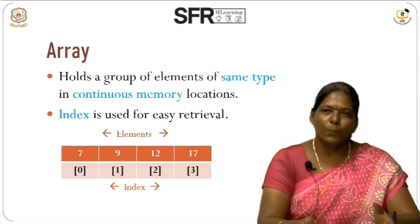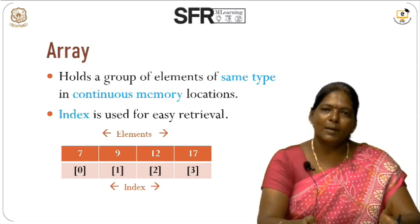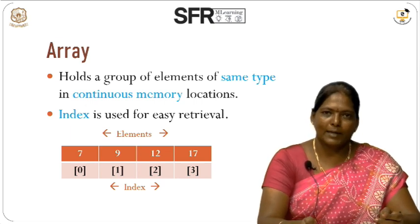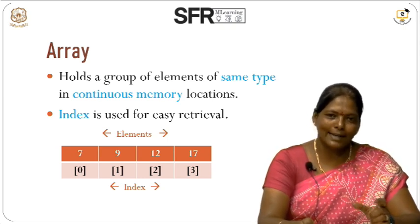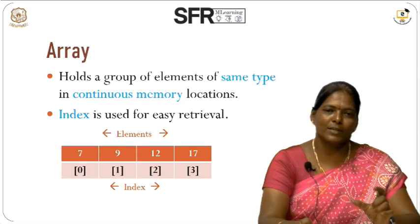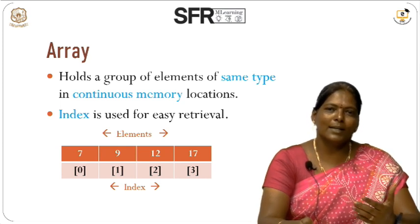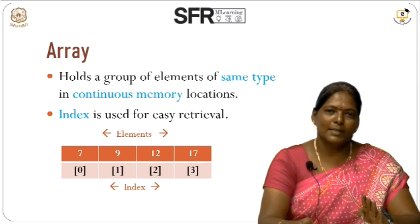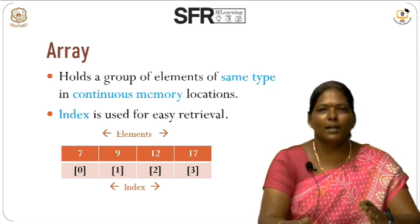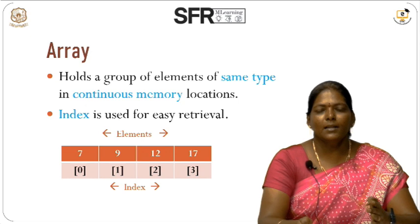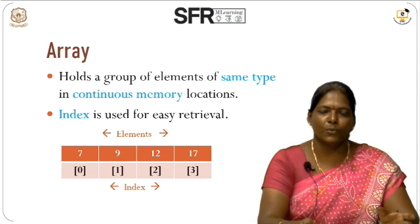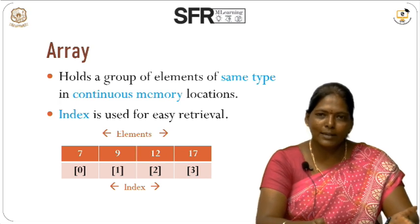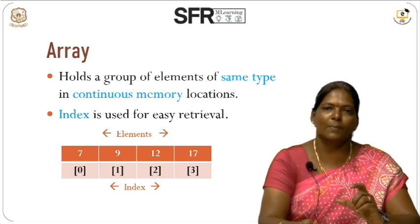An array is a group of elements of the same data type, stored in a continuous memory location. To access each element of the array, we have an index value affixed to each value. As you can see in the PPT, the array contains 4 elements: 7, 9, 12, and 17. Each element has an index value starting from 0. Because elements are stored continuously, the index positions are in continuous order.